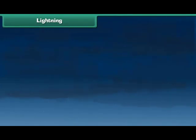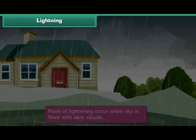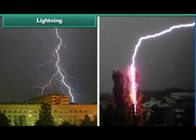Lightning is also a natural disaster. During the rainy season, when the sky is filled with dark clouds, we see flashes of lightning. Lightning may strike buildings, trees, or fields. When lightning strikes, everything at that place burns. Sometimes animals and even people die due to lightning.